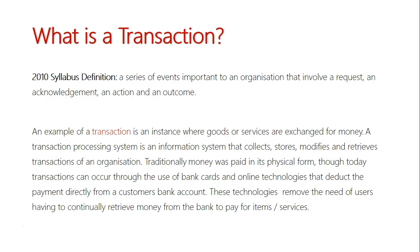Traditionally, money was paid in physical form. You'd have to go to the bank, take out physical money, and then go to the shops and spend it. Now, with Transaction Processing Systems, we can use our credit cards or just type in numbers in Internet Banking, and it will automatically subtract money straight from my bank in order to pay for goods from a website. TPSs have really made the selling and shopping experience a whole lot easier.